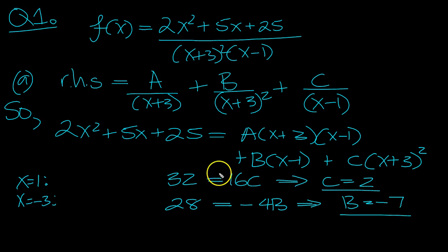And then what we'll do is we'll collate the X squared terms. So we get 2 is equal to A, X squared there, no X squared there, plus C. C is 2 so that tells us that A is 0.